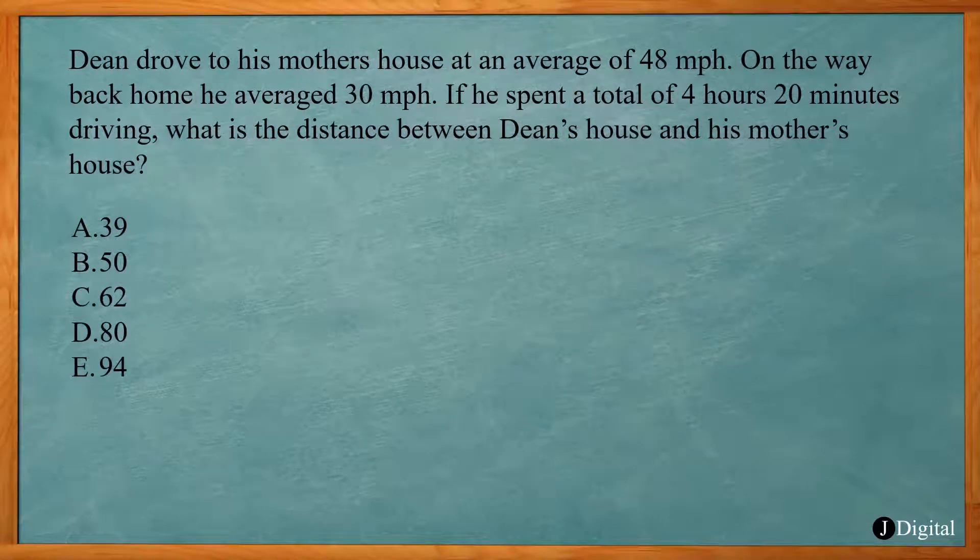In our last ACT math problem, Dean drove to his mother's house at an average rate of 48 miles per hour. On the way back home, he averaged 30 miles per hour. If he spent a total of 4 hours and 20 minutes driving, what is the distance between Dean's house and his mother's house? Now I'm going to let you try this one. Pause the video and figure this out. It's going to be one of these answers, A through E.